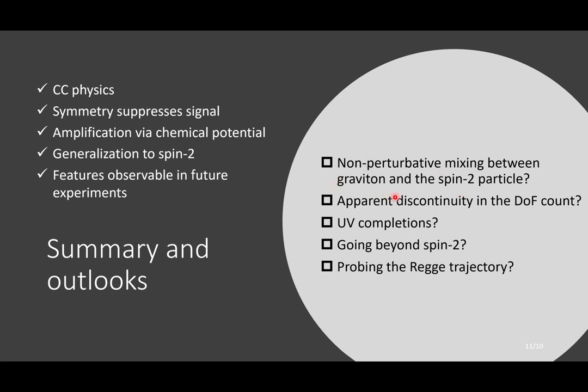There are also a few outlooks, such as the non-perturbative consideration of the mixing between the graviton and the spin-2. And there is a theoretical question of this apparent discontinuity in the degree of freedom count. And we are also looking for possible UV completions. We have found some evidence from the axion SO(2) model, and we are still looking for them. Also, going beyond spin-2 and perhaps even probe the Regge trajectory.